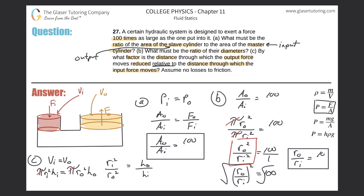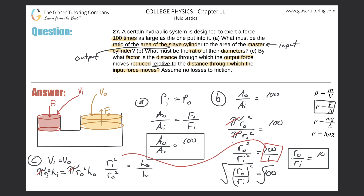Flipping the ratio: if r_out² / r_in² = 100, then r_in² / r_out² = 1/100. Therefore h_out / h_in = 1/100, or 0.01. The output distance is reduced by a factor of 100 relative to the input distance. That's the answer to part (c) — 1/100 or 0.01.